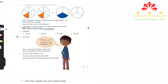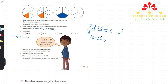Two-thirds of 15 means we divide 15 into three equal pieces and show two of those pieces. 15 divided by 3 is 5, so each piece is 5. Two out of three equal pieces equals 10. For part b, three-fourths of 24 means 24 is divided into four equal parts.